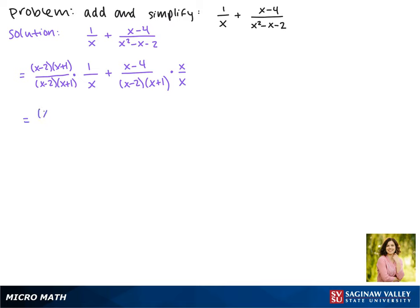So on the top we get (x - 2)(x + 1) over x(x - 2)(x + 1), plus x(x - 4) over x(x - 2)(x + 1).